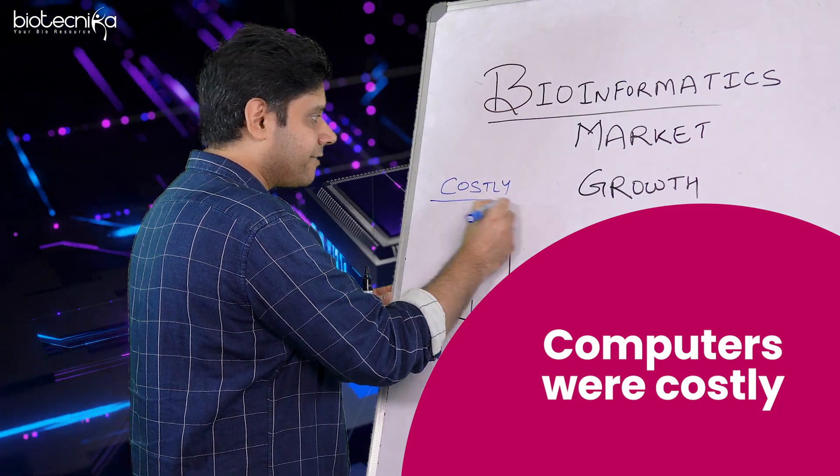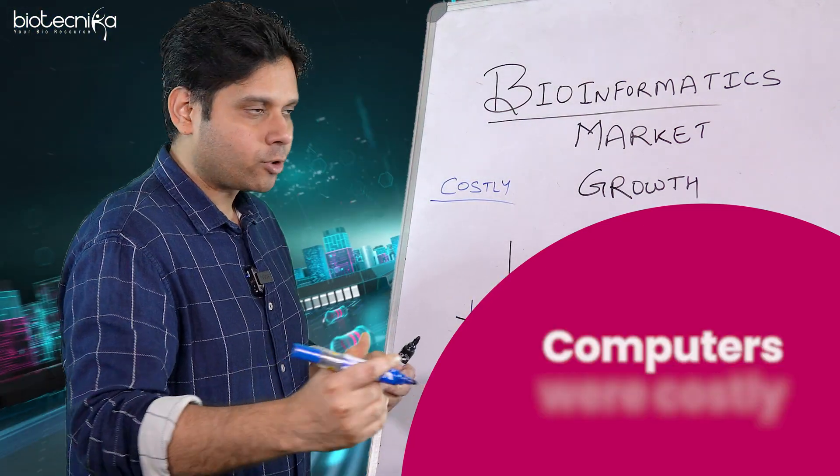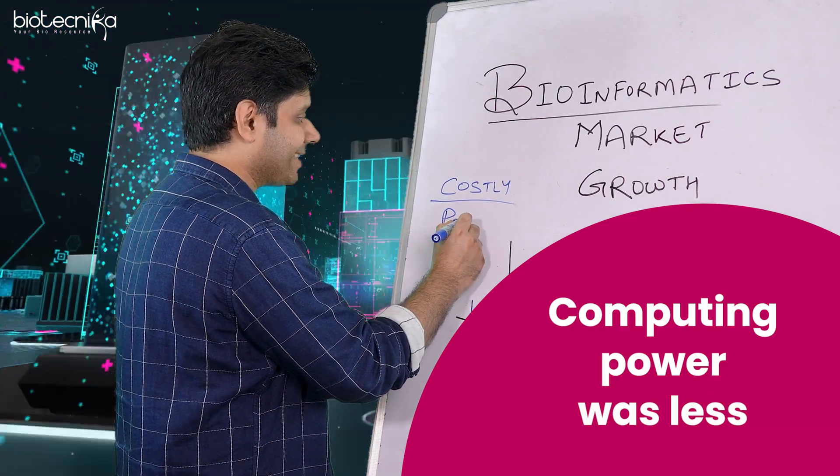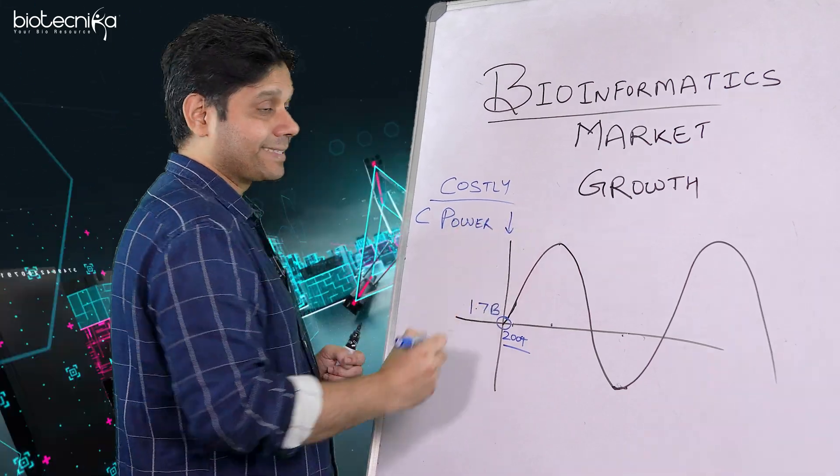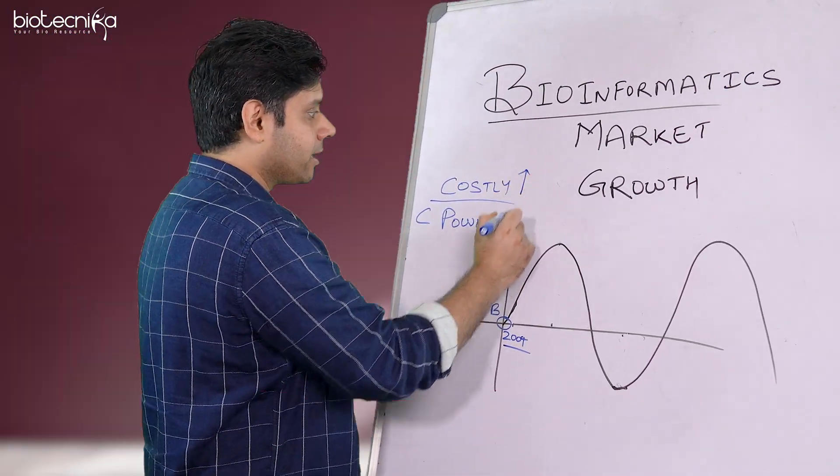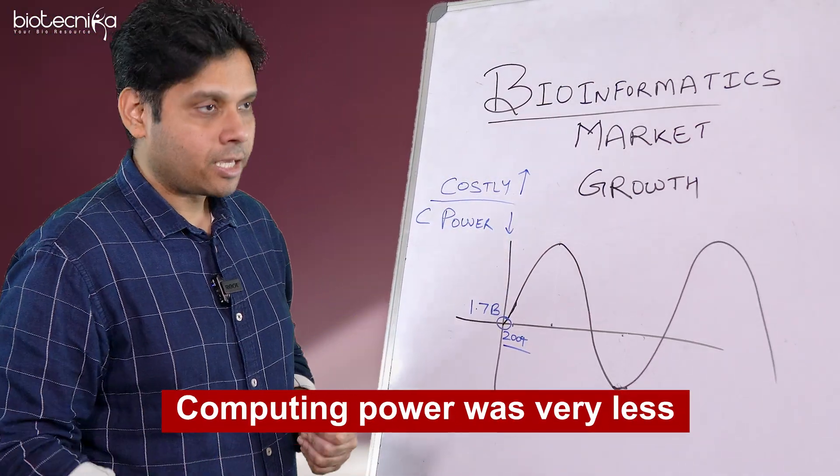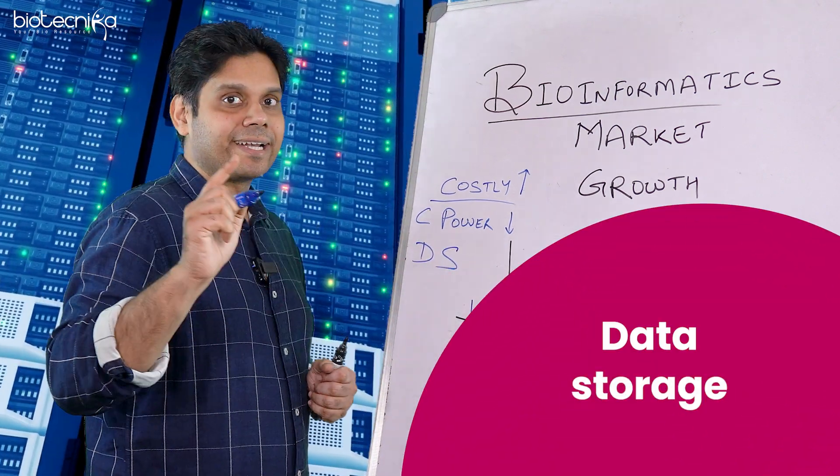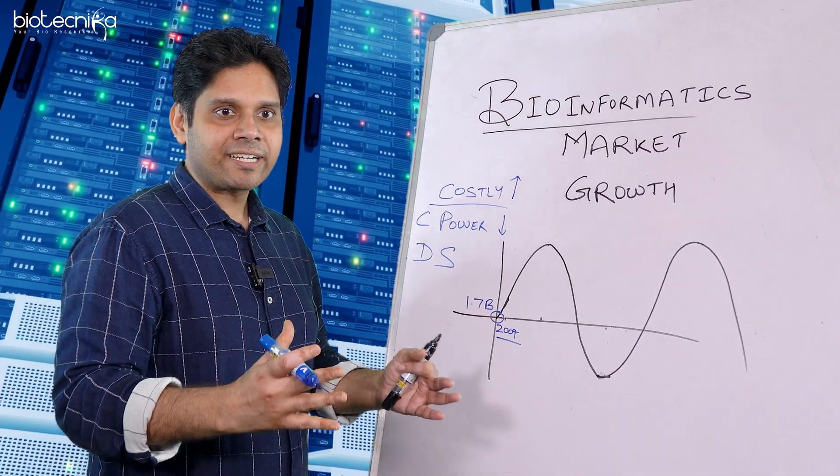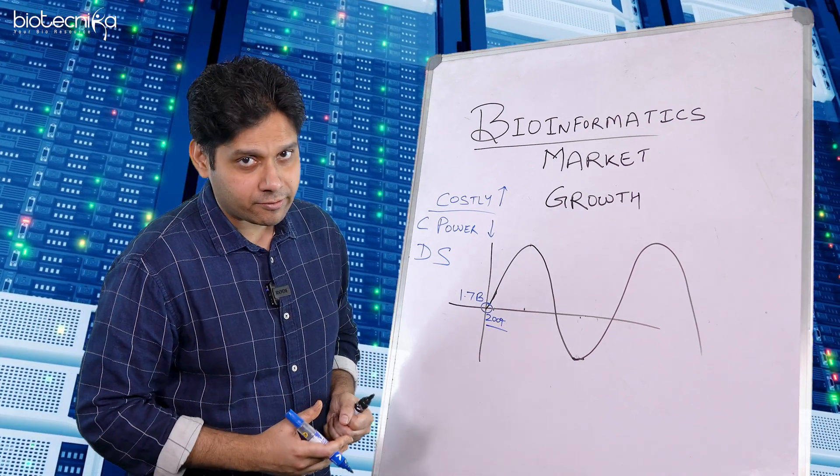Okay, even if somebody could afford, the computing power was less. Okay, so the computing power was less. The cost was very high, but the computing power was very less. Another problem was there was a problem with data storage, because we didn't have hard drives which could store petabytes of data.